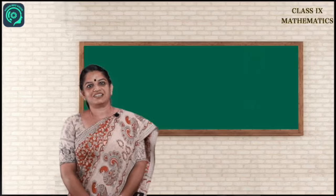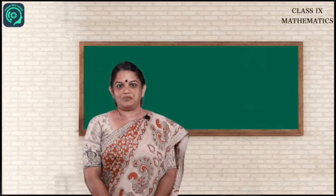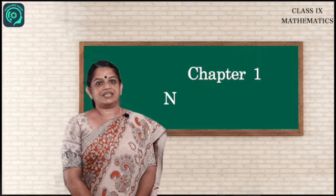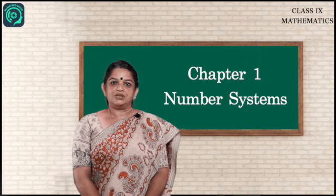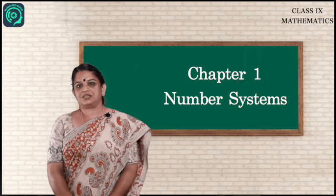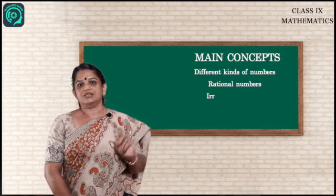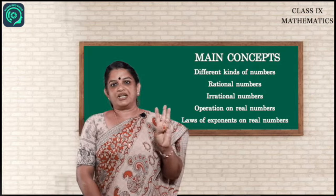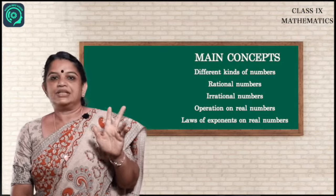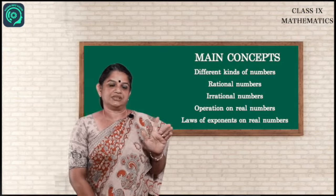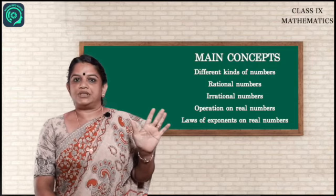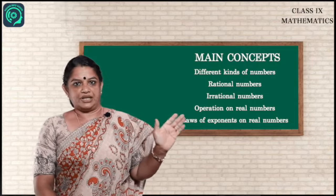Hi children, hope all are safe at home. Today let us start the 9th standard first lesson: Number System. Before going into detail, let us first see what are the main concepts in this lesson. The first one is different kinds of numbers, second one rational numbers, third one irrational numbers, fourth one operations on real numbers, and the last concept is laws of exponents on real numbers.